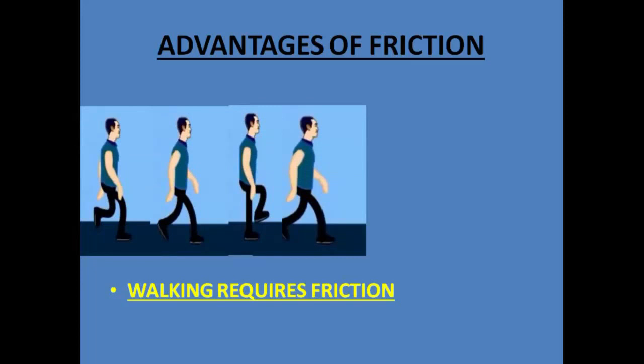Friction is also necessary for operations of many small things in our daily lives like the belts, pulleys, clutches and brakes. Nails and screws remain fixed where they are driven because of friction.